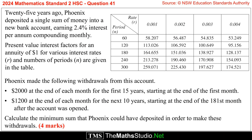Phoenix made the following withdrawals from this account: $2,000 at the end of each month for the first 15 years, starting at the end of the first month, and $1,200 at the end of each month for the next 10 years, starting at the end of the 181st month after the account was opened.